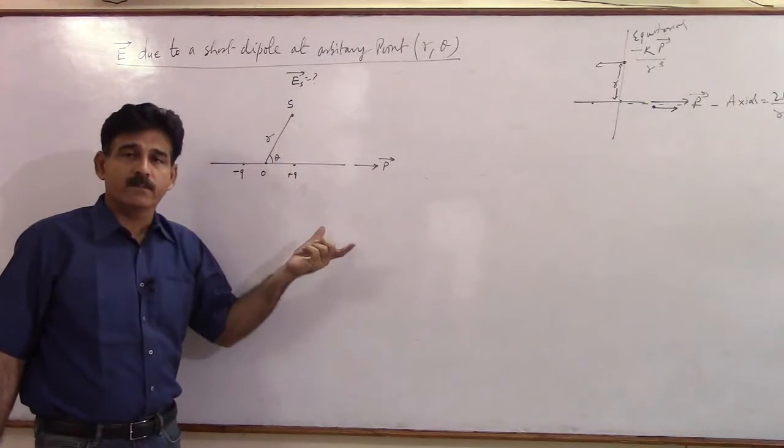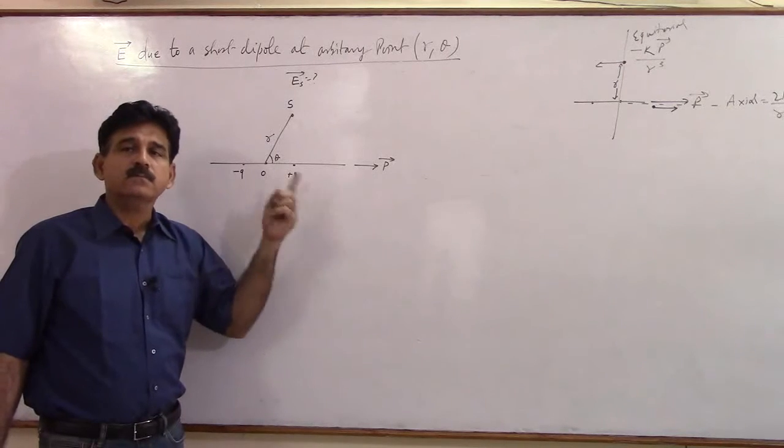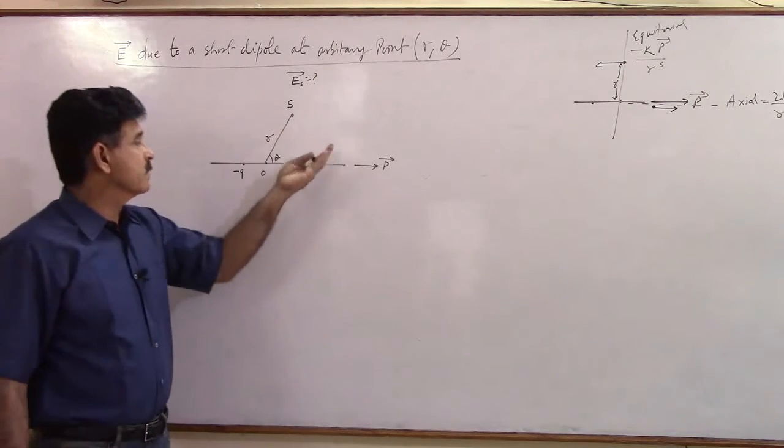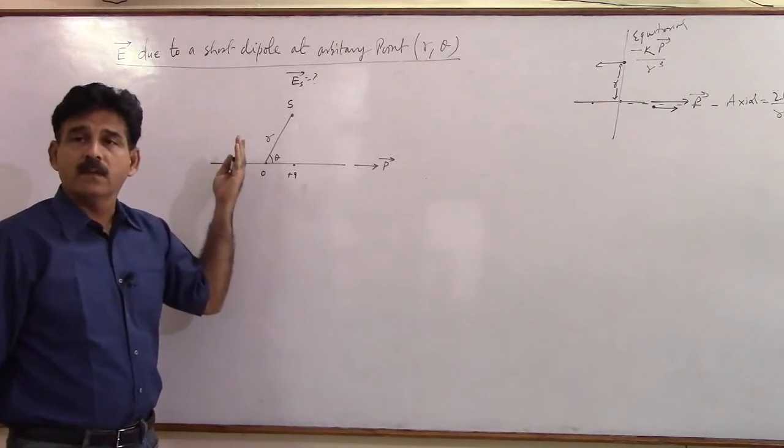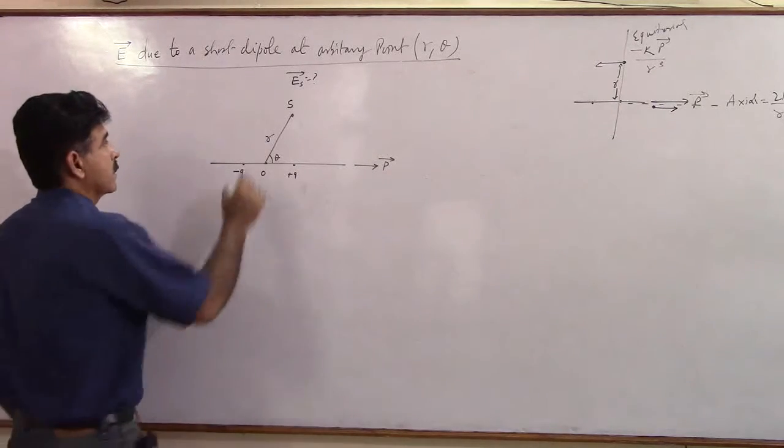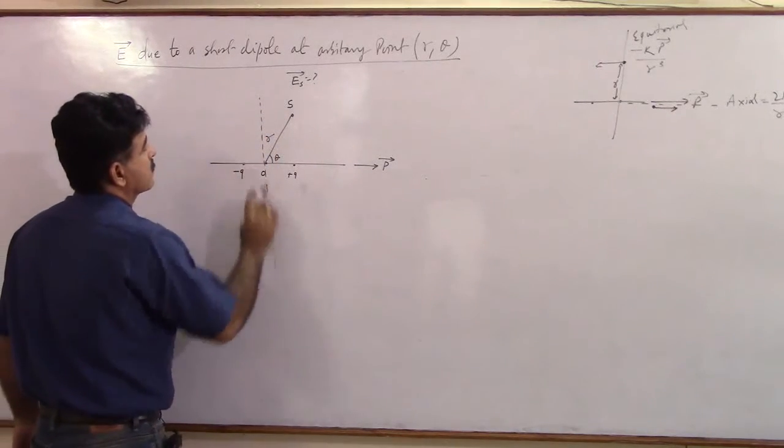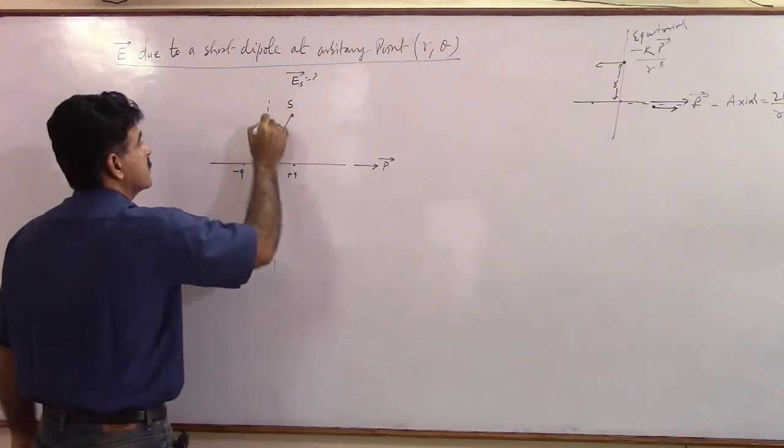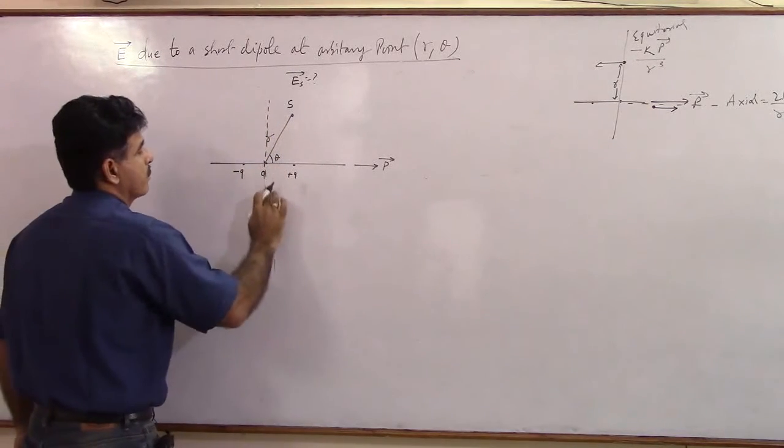If theta was zero, where will the point be? On the axial line. If theta was 90, where will it be? Equatorial line. This is your equatorial line as usual.